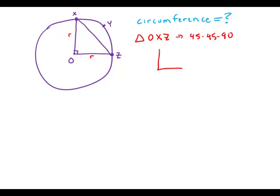And we know that the ratio of the sides in that triangle has to be 1-1-√2.